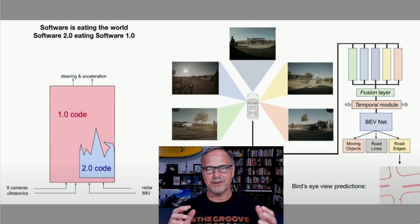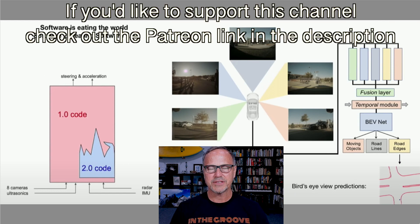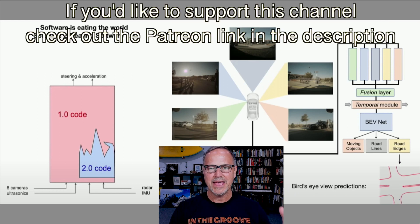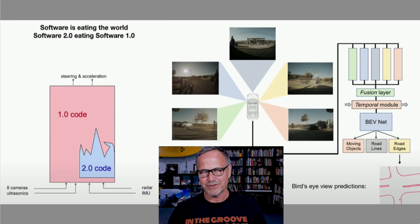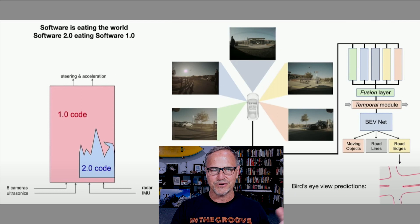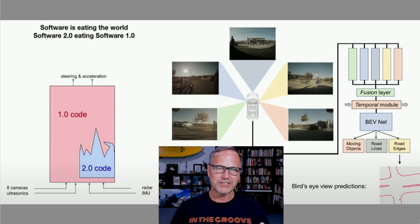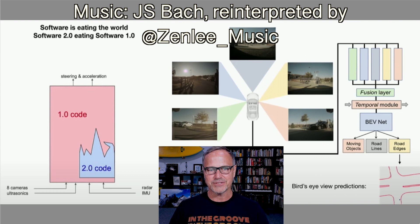I'm Dr. Know-It-All. I'm going to be using some pictures here, a couple of graphics that I made. This first graphic, I think it was from Tesla's AI Day, although it might have actually been earlier. It's an image that shows how Tesla's cars are seeing the world, and also about the 2.0 code that's eating the 1.0 code. I've done a bunch of videos about all this stuff, so you can certainly check them out if you're interested.